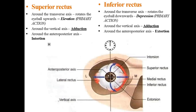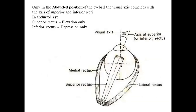The superior rectus: around the transverse axis it rotates the eyeball upwards (elevation); around the vertical axis it causes adduction; around the anteroposterior axis it causes intorsion. The inferior rectus: around the transverse axis it rotates the eyeball downwards (depression); around the vertical axis it causes adduction; around the anteroposterior axis it causes extorsion. Only in the abducted position do the visual axis and the axis of the superior and inferior recti coincide — so in the abducted eye, superior rectus causes elevation only and inferior rectus causes depression only.